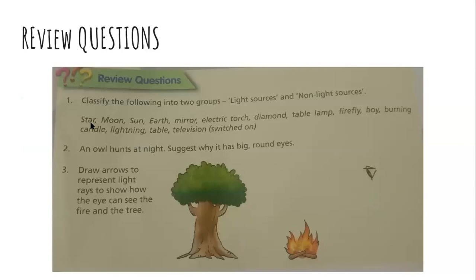Now let's discuss the review questions. I'm just going to give you some hints. Classify the following into two groups: light sources and non-light sources. For example, a star is a light source — it produces its own light. The sun is an example of a star. The moon, we all know, does not produce its own light. You can do the others as well.